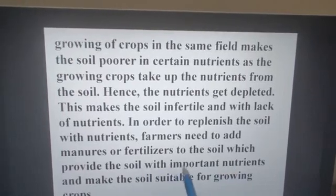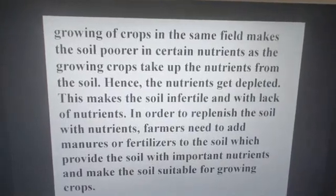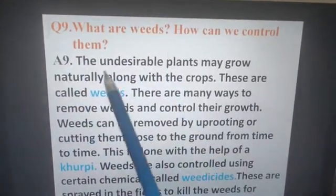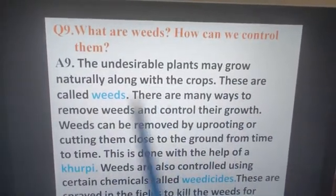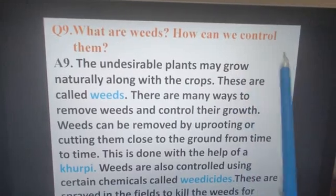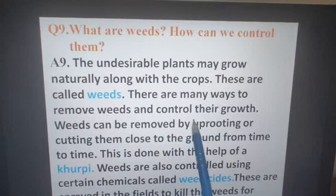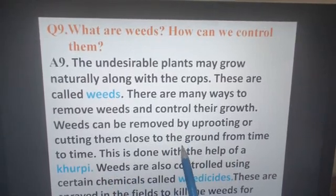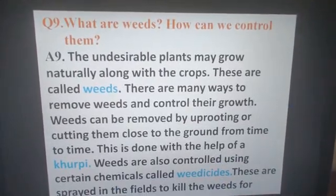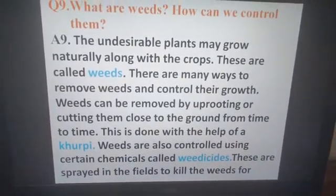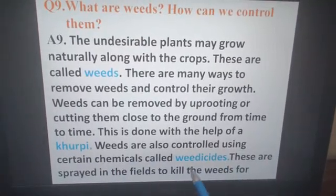What are weeds? Undesirable plants that may grow naturally along with the crops are called weeds. How can we control them? There are many ways to remove weeds and control their growth. Weeds can be removed by uprooting or cutting them close to the ground from time to time. This is done with the help of a khurpi — this is manual controlling of weeds. Weeds are also controlled using certain chemicals called weedicides, which are sprayed in the field to kill the weeds.